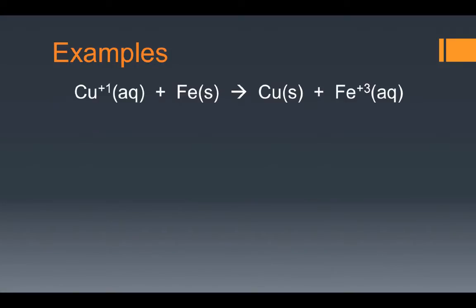Our first example: the copper +1 ion in aqueous solution is reacting with solid iron metal. This reaction produces solid copper, which plates out on the surface of the iron, as well as the iron +3 ion, which goes back into solution. Our job is to ensure this reaction is balanced not only for the number of atoms, but also for the number of electrons exchanged. Step one says to balance the reaction for atoms aside from oxygen and hydrogen — that is already taken care of here, so we can skip step one.